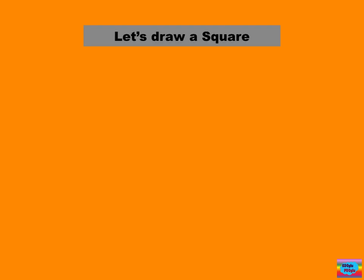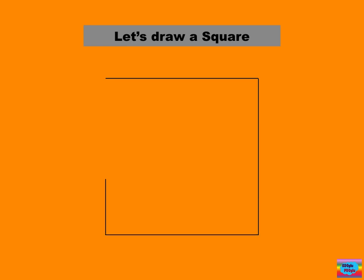Let's draw a square. First we do a left to right. And now we do a top to bottom. Then we do a right to left. And then we do bottom to top. And that's how we draw a square.